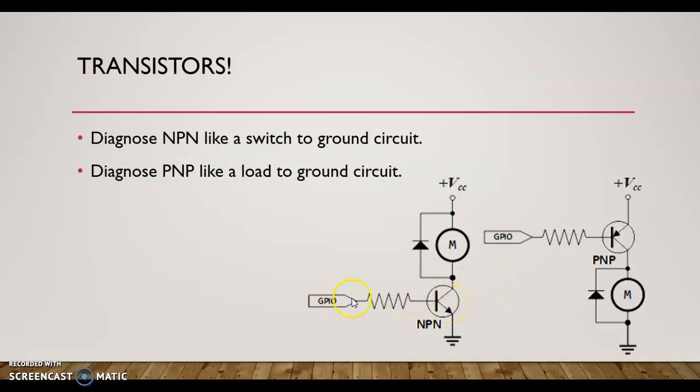The reason why I say I diagnose it like a switch is if I have 12 volts up to this transistor, I know the base isn't being applied. Once I apply the base, this 12 volts goes down to 0.1 or less, much like a switch to ground. Diagnose it accordingly. Over here, the PNP is also known as a high-side driver, and I'm going to diagnose that like a load-to-ground circuit. I'm going to have 12 volts up to the transistor until the transistor is turned on by the computer, and then I'm going to have 12 volts after it. I should have zero here going into the load until the transistor is turned on, and then it gets the 12 volts or whatever operating voltage is needed for this load—in this case, a motor—to operate. Again, the NPN I diagnose like a switch to ground; the PNP I diagnose like a load-to-ground circuit.